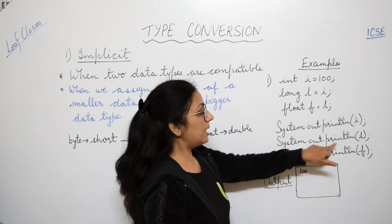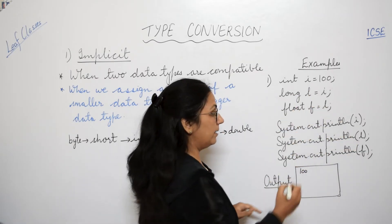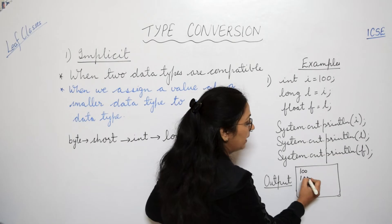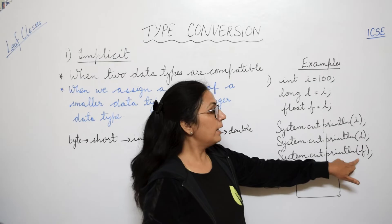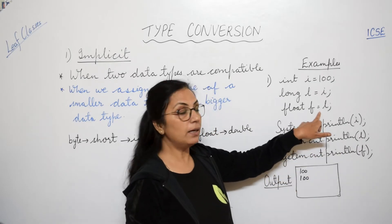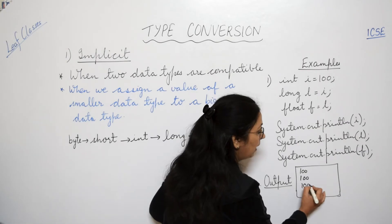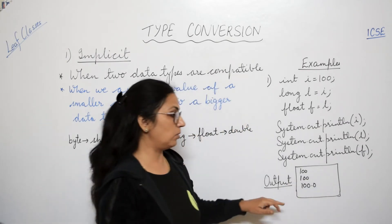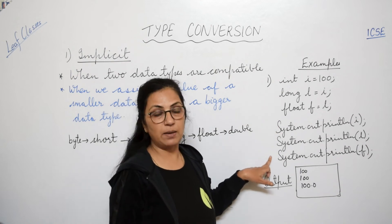So when you will print i, seedha seedha kya print ho jaega? 100. Print l in l. L mein kya hai? i ki value. And this is also compatible. You will get the answer as 100. And when you will give print l in f, now here what is there? This is also compatible. And since it is float type, so the value will be stored like this. So this will be the output of this program segment.